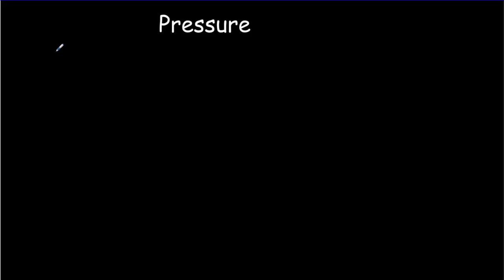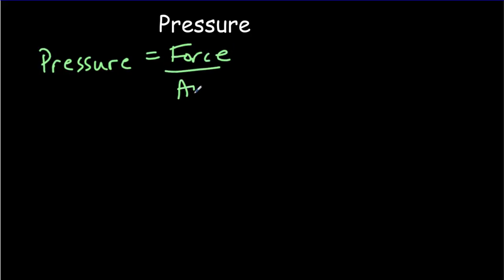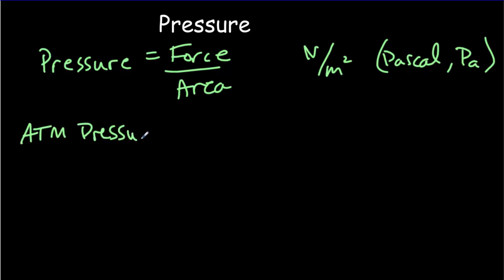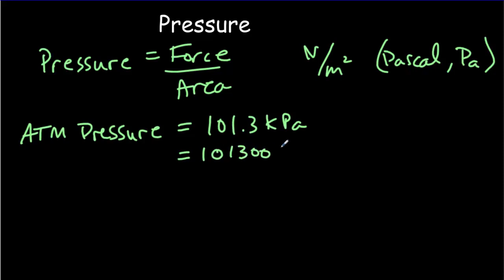Pressure is simply the force per unit area. The units are newtons divided by meters squared. We have a special name for a newton per meter squared — that's called a Pascal. Atmospheric pressure at sea level is equal to 101.3 kilopascals, or over 100,000 pascals.